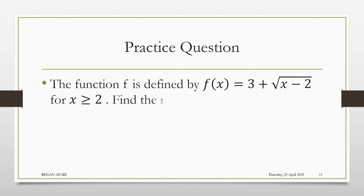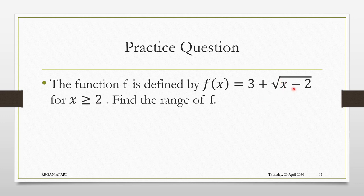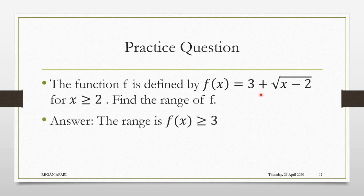I would like you to pause and then solve this question. F of x is defined as 3 plus the square root of x minus 2, when x is greater than or equal to 2. Find the range. When you put 2 in: 2 minus 2 is 0, and the square root of 0 is 0, so 3 plus 0 is 3. When you increase to 3: 3 minus 2 is 1, the square root of 1 is 1, and 3 plus 1 is 4. Therefore, the range is f of x greater than or equal to 3, because the minimum value you can get is 3 when x is 2.